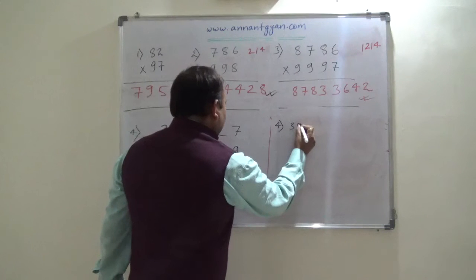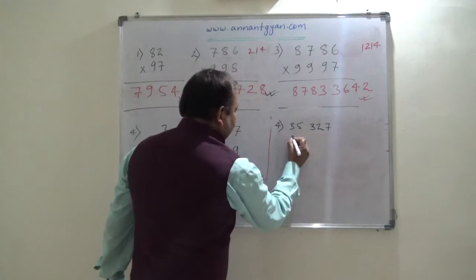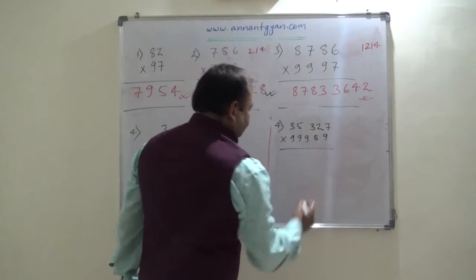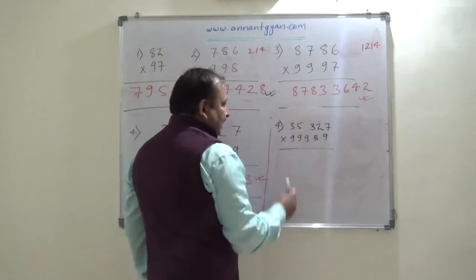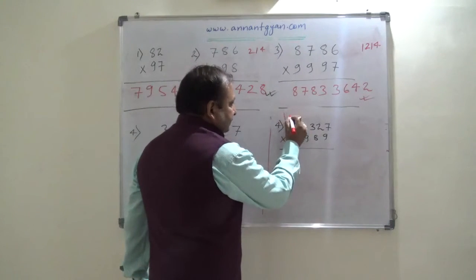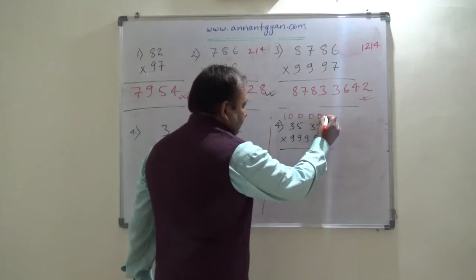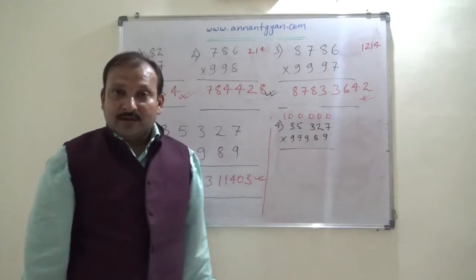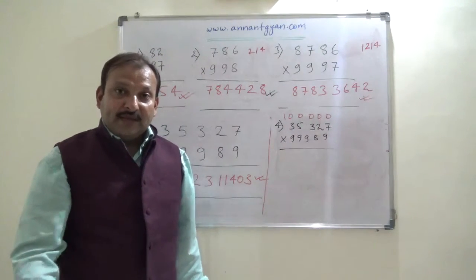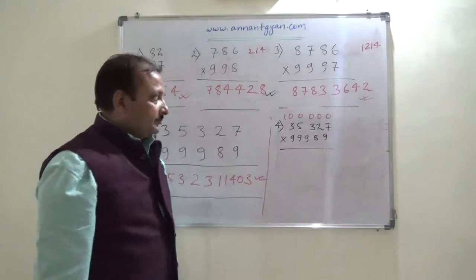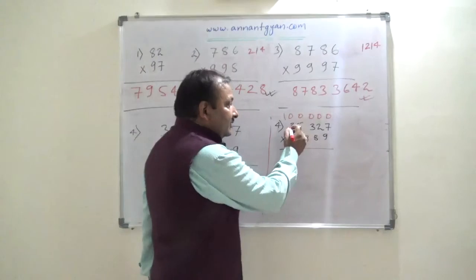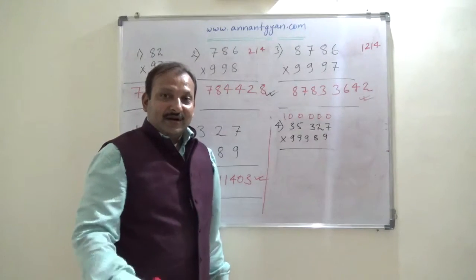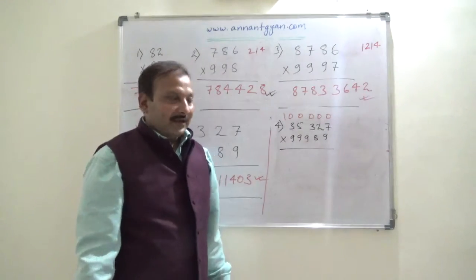The next example is 35327 into 99989. Here the base number is 1 lakh (100000). Both numbers are near 1 lakh, so we apply this Nikhilam trick. The second number 99989 is near 1 lakh. The first number 35327 is more than 30000, so we shall apply the formula.